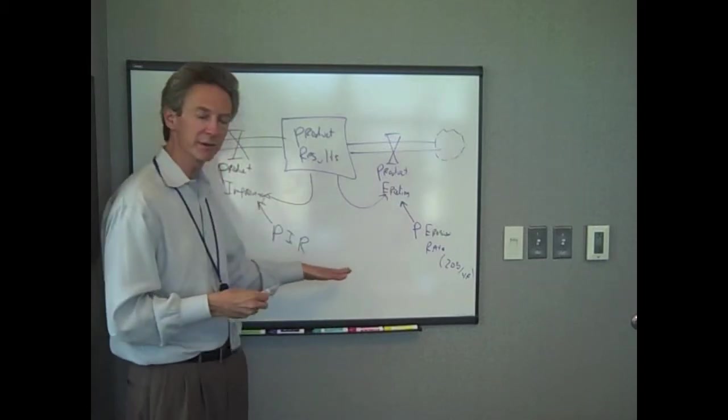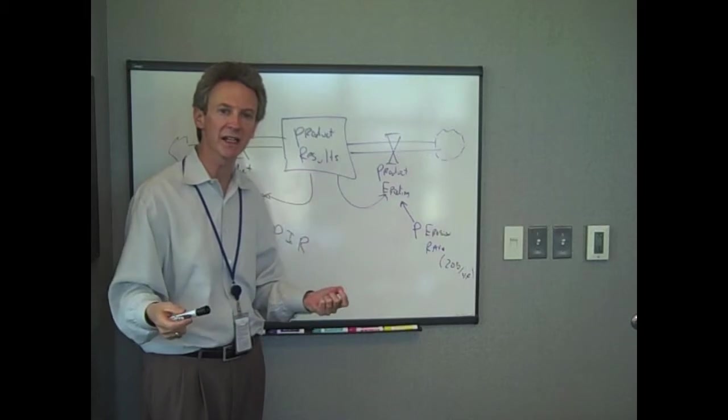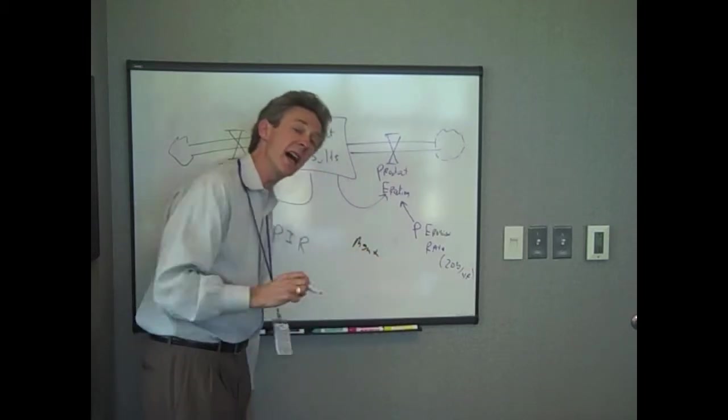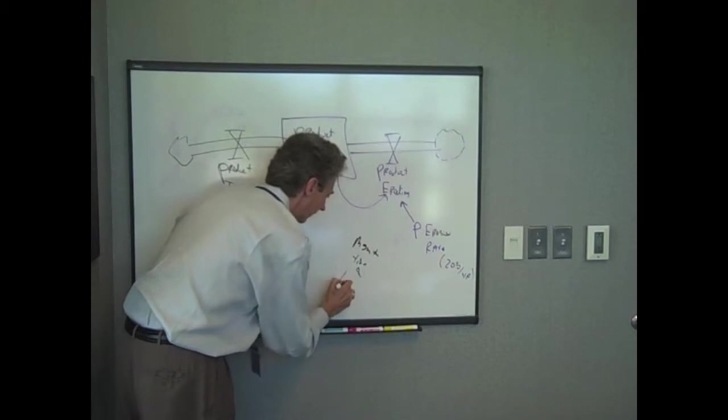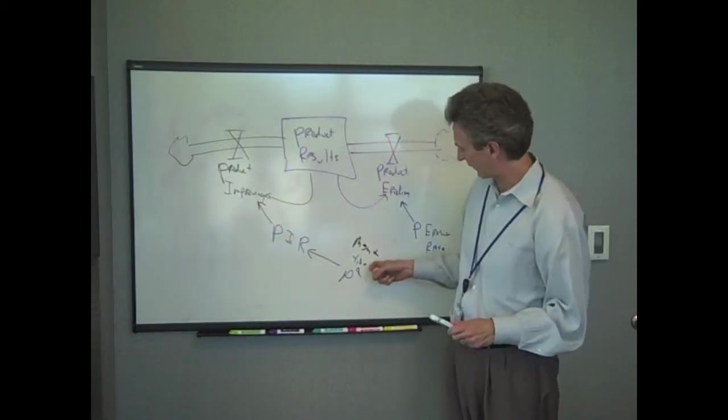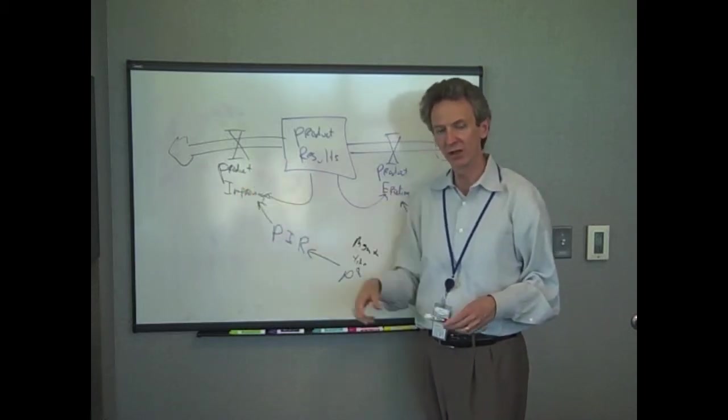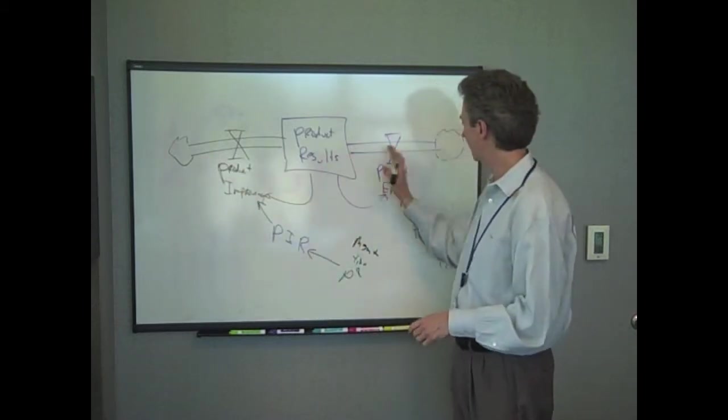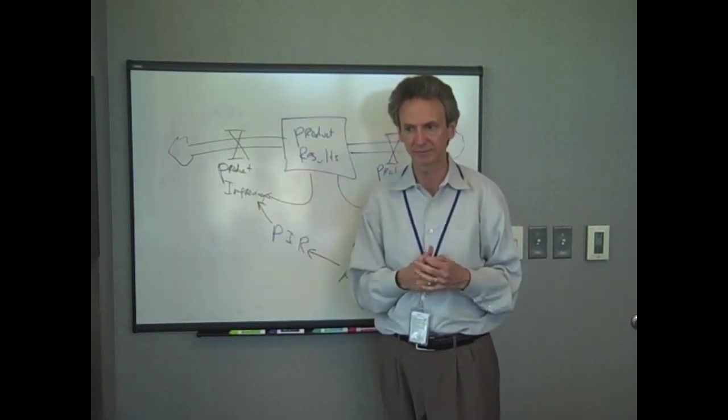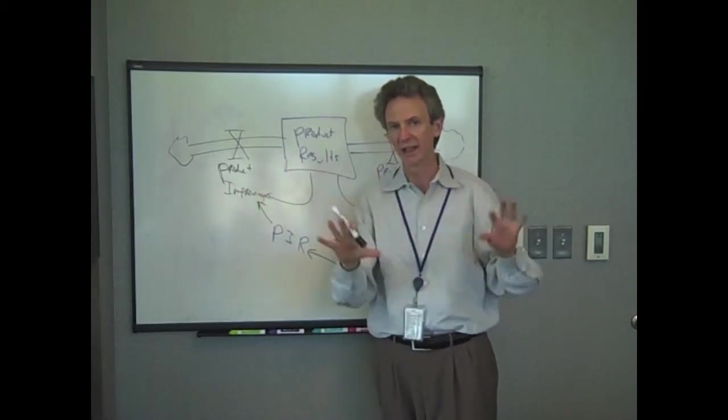Now, just to finish this before we model it in Excel, the improvement rate, how much it improves in our whack-a-mole game depends on how much time management is paying attention to it. So we are going to do management time on product, on P. So the management time on the product, that is going to drive a product improvement rate and that is going to drive the product actually improving. So you have the product improving because of management time. You have the product eroding which will happen if nothing is done. It will erode to some extent. And this will basically form the end of our single balancing loop. Then we will just copy this to another loop and then connect them together.